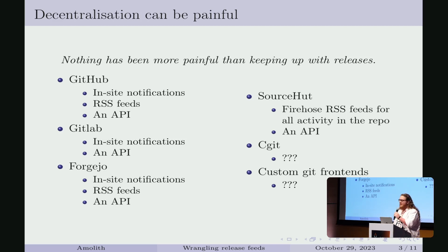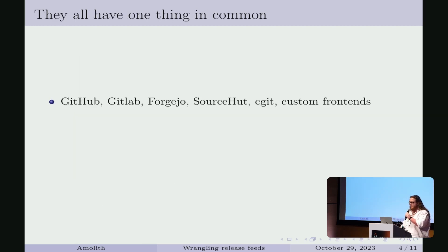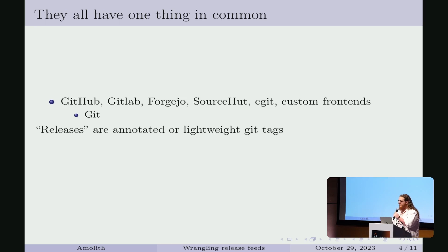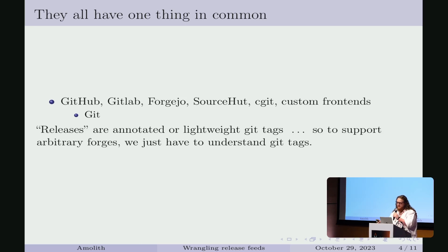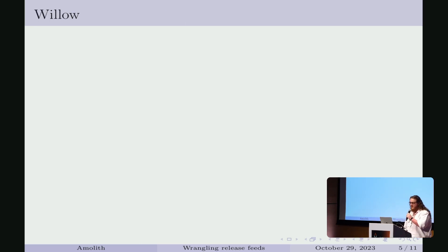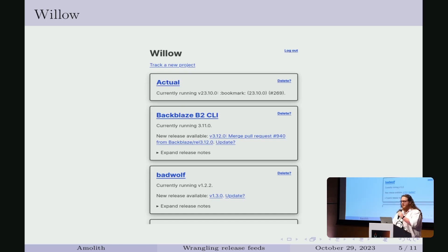On the surface, tracking releases in a unified way is not possible. But that's not quite accurate, because they do all have one thing in common: the version control system Git. The release functionality on all the different platforms are lightweight abstractions on top of Git tags — sometimes annotated tags, sometimes lightweight tags. To track releases across all those platforms, all we have to do is understand Git tags. Willow is software I've been developing that is an implementation of that idea — still proof-of-concept, alpha quality, but it does work and I've been using it for a few months.